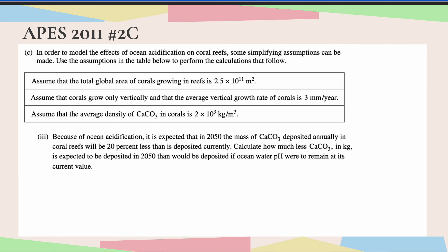Because of ocean acidification, it is expected that in 2050 the mass of CaCO3 deposited annually in coral reefs will be 20% less than is deposited currently. Calculate how much less CaCO3 in kilograms is expected to be deposited in 2050 than would be deposited if ocean pH were to remain at its current value. So now basically all we have to do is we know from part B we have our mass of 1.5 times 10 to the 12th kilograms.